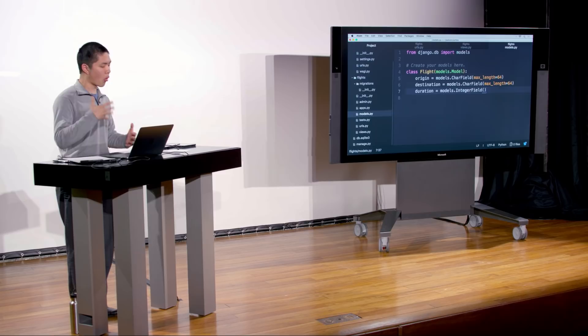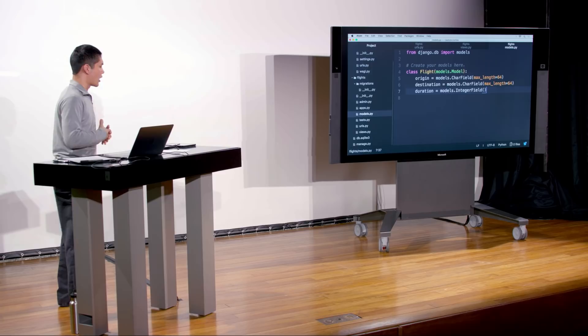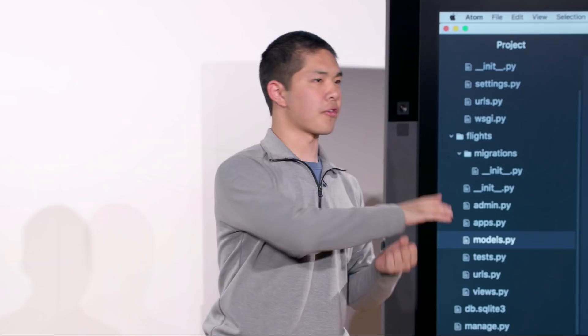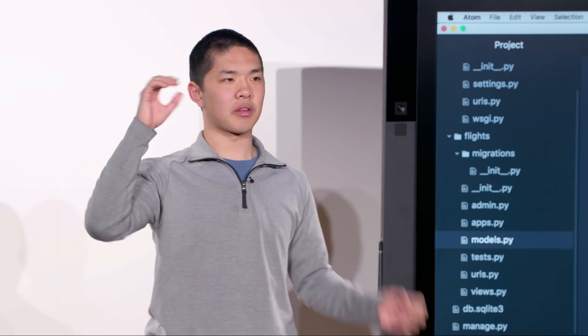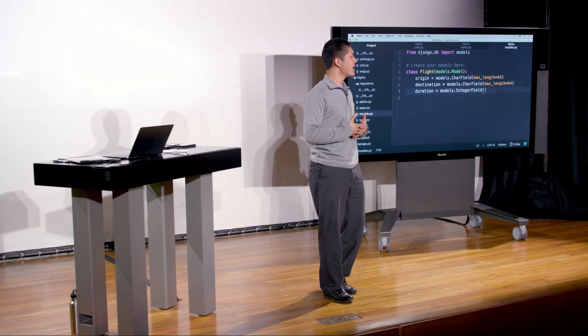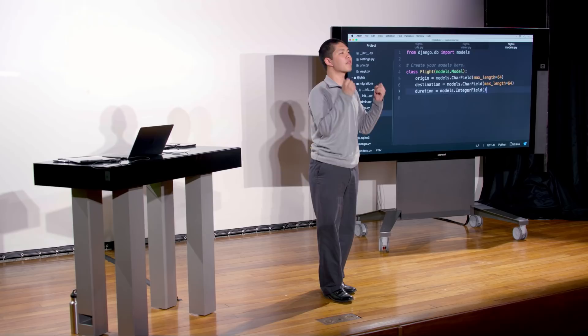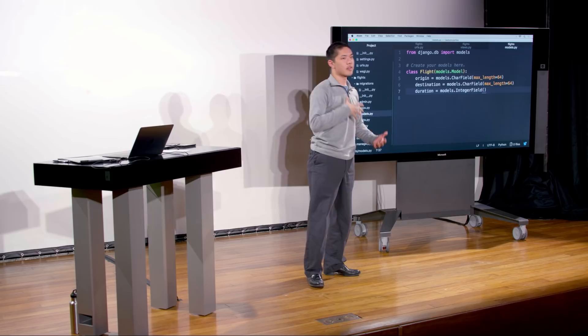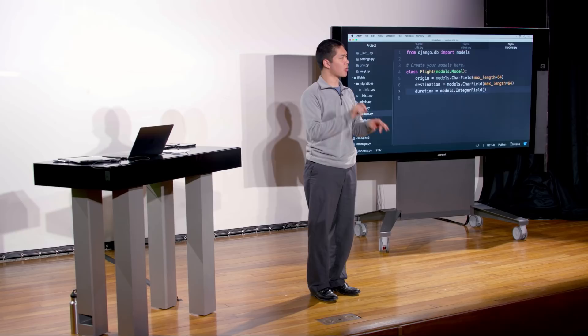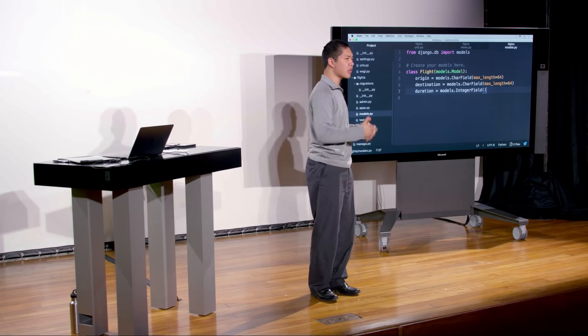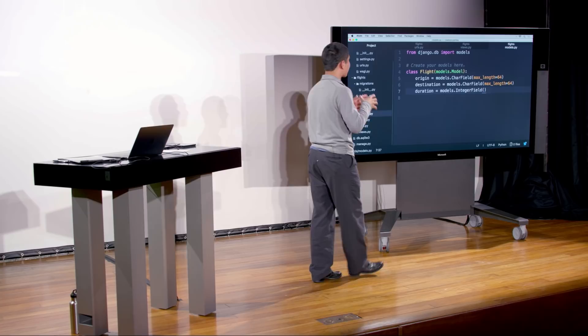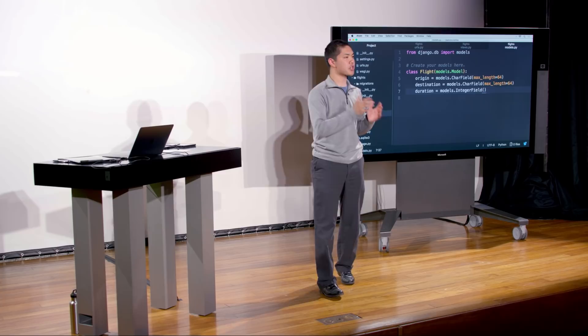Now we introduce the concept of migrations. Rarely when you start building a web application will you define all tables exactly as you want them from the beginning — usually you'll start with a basic framework and as your application grows you'll want to add tables, modify columns, or modify relationships. Without migrations, every time you wanted to make a change you would need to both change your model code and also run ALTER TABLE commands in SQL. Django uses migrations to solve that problem, automatically detecting changes to models.py and generating the necessary SQL code.